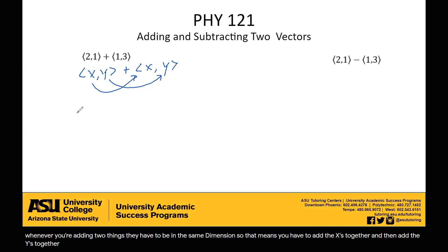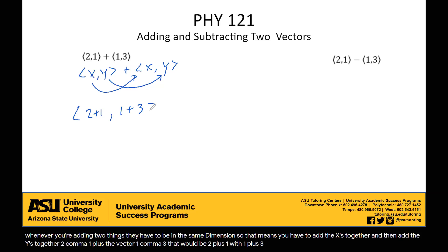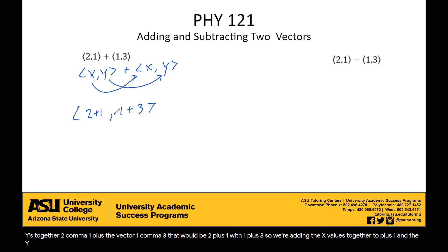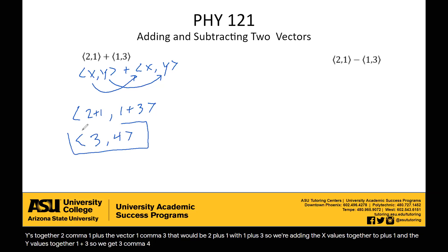So the vector (2, 1) plus the vector (1, 3) would be 2 plus 1 with 1 plus 3. We're adding the X values together — 2 plus 1 — and the Y values together — 1 plus 3 — so we get (3, 4). That would be the final vector adding those two together.